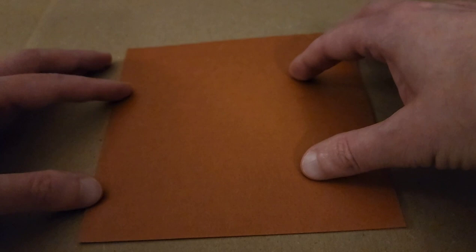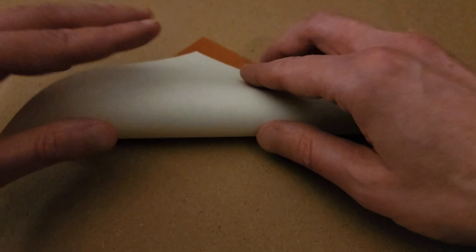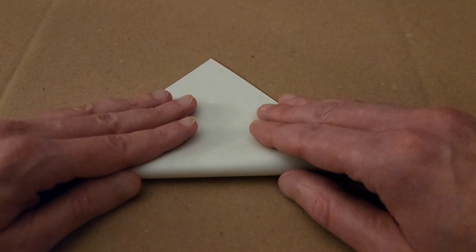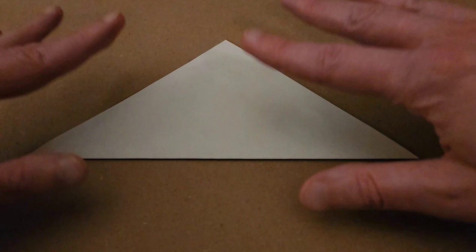All right, so we're going to start off with a fairly simple base, the bird base. Going to be starting with the colored side facing up, and then fold your piece of paper in half to make a triangle.